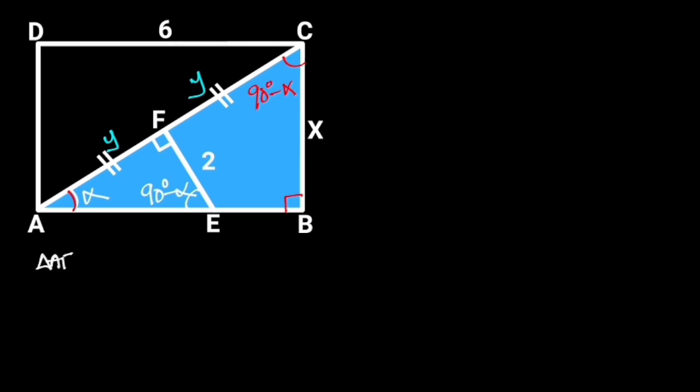Observe that triangle ABC has a common angle with triangle AFE, which we have already taken as alpha. So the remaining angle will be 90 degrees minus alpha. This shows that triangle AFE is similar to triangle ABC.